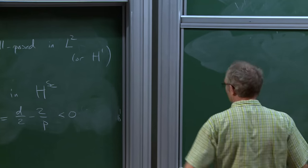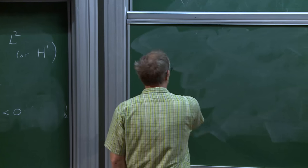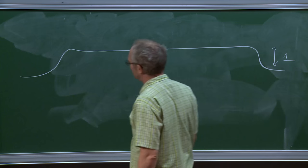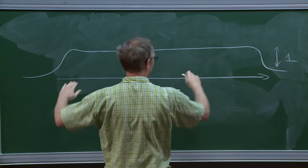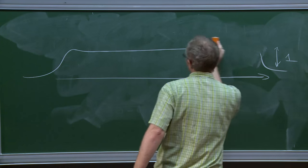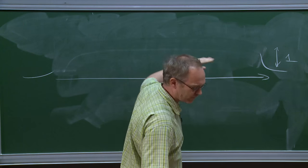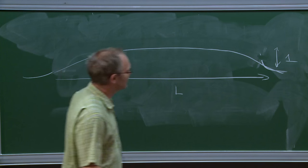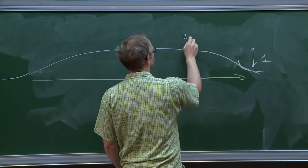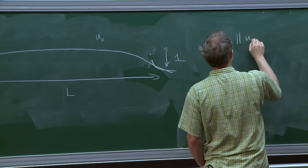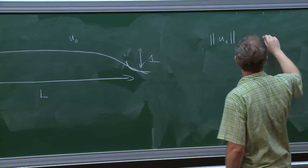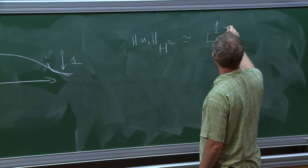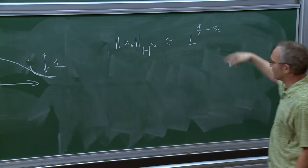Imagine you take initial data which introduces one of the key enemies in this regime. Imagine initial data with height about 1 but very fat—living truly at scale L. If you calculate u_0 in the critical space, just by dimensional analysis, it's going to be about L to the power d/2 minus SC. Since SC is negative, this is a huge power of L. If L is big, this is big. The data is fat, so it's slow moving.